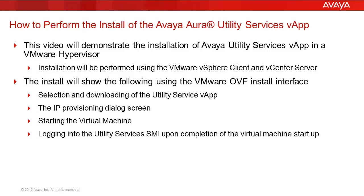This video will demonstrate the steps to install the Avaya Aura Utility Services vApp into a VMware hypervisor. The various steps will be performed using the vSphere client and vCenter for administration. The OVA file install will perform the storage provisioning, the IP addressing, and identify the Communication Manager it is associated with. The virtual machine will be started and we will log in to the Utility Services SMI to validate the install was performed correctly. Let's move on to see how this install is performed.